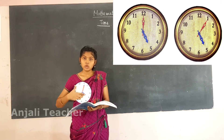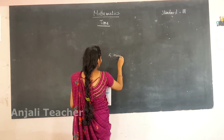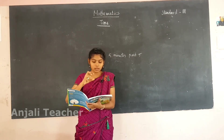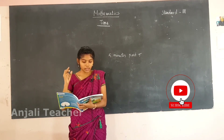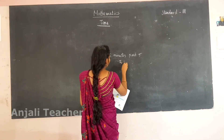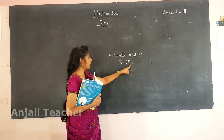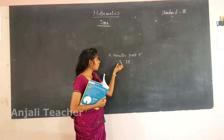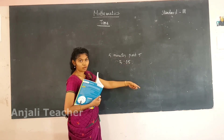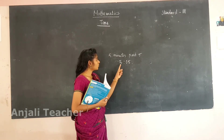So the time is 5 minutes past 5. How will you write that? You write it as 5:05 — where 5 is the hour and 05 is the minutes. The first number is the hour and the next number is the minutes. In words you write it as '5 minutes past 5.' So 5 minutes past 5 equals 5 hours and 5 minutes, written as 5:05.